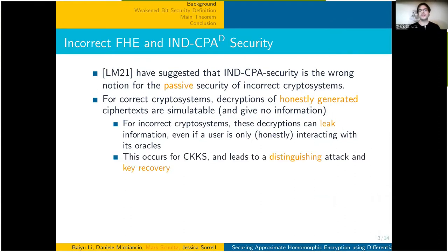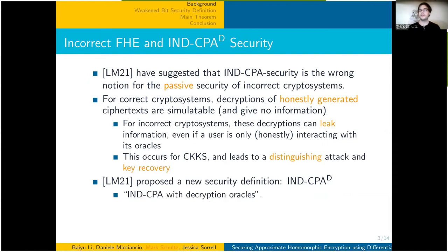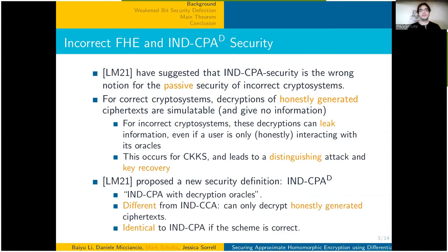This occurs for CKKS and leads to a distinguishing attack and a key-recovery attack. Li and Micciancio proposed a new security definition, which they call NCPA-D security, or NCPA with decryption oracles. This is different from CCA security, as you can only decrypt honestly-generated ciphertexts. In the setting of correct encryption it's identical to NCPA security, but as CKKS shows, for incorrect encryption there is a separation between the two notions.